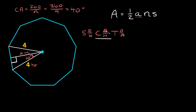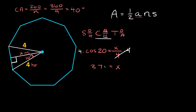We take the cosine of 20 degrees and set it equal to the adjacent side over the hypotenuse: cos(20°) = x/4. Multiplying both sides by 4, we get x equals 4 times the cosine of 20, which is approximately 3.76. That's the length of the apothem.